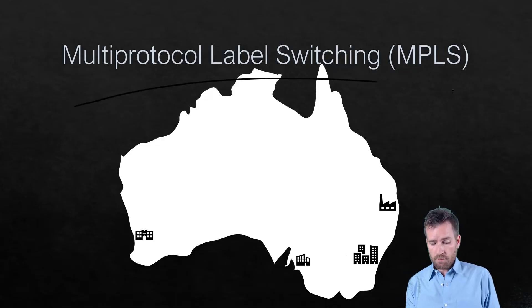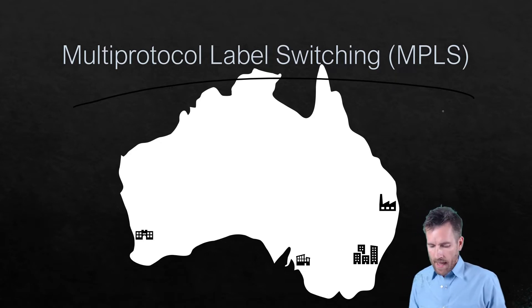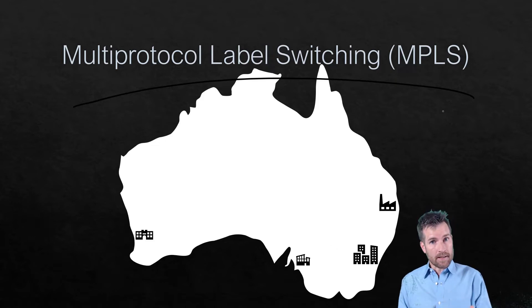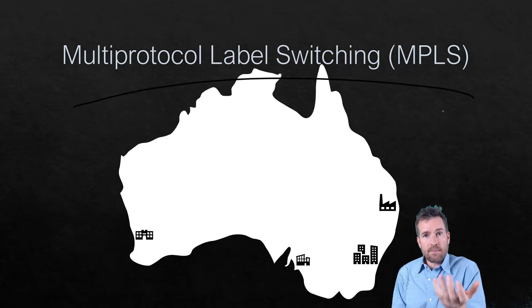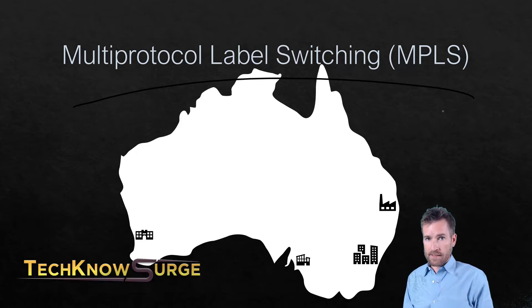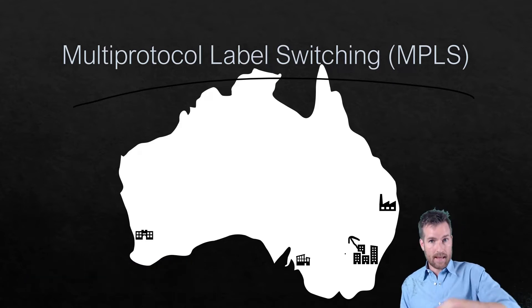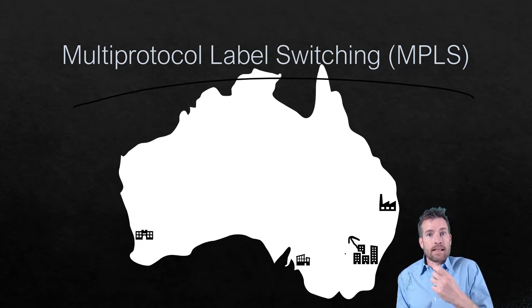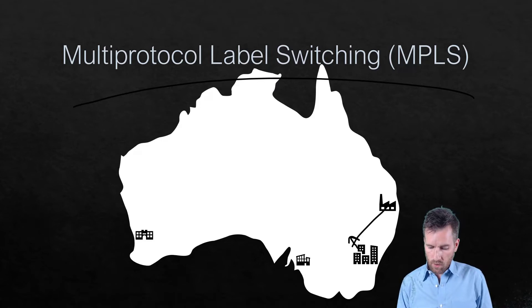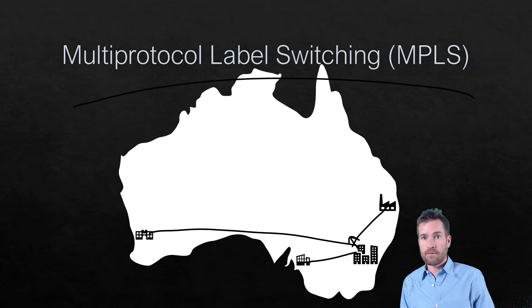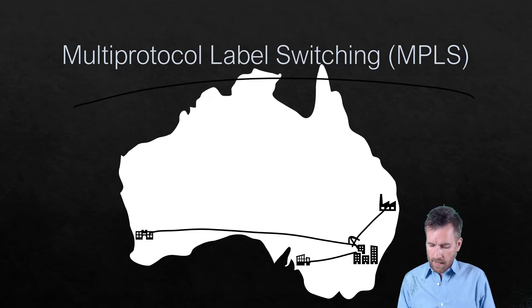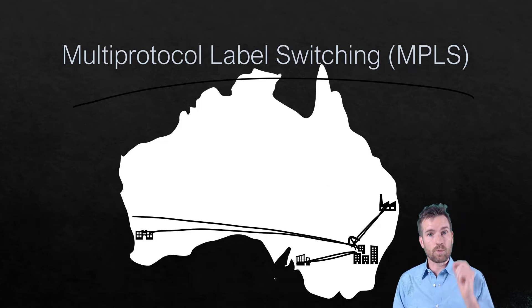Another good option would be multi-protocol label switching, or MPLS. MPLS is provided by a communication provider and it uses shared lines — you're sharing it with other customers. The key difference is that with a regular layer-three network, every single hop along the way has to process that packet and send it on to the next hop. MPLS operates differently: when it exits your network into your communication provider's network, it gets labeled, and that label has a specific route to its final destination, making it a much faster protocol. MPLS is a little more expensive, but it's great for connecting headquarters with branch offices at really fast speeds.